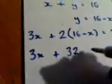So let's expand the brackets. We get 3x and we'll have plus 32 take away 2x that will equal 26. So what I've actually achieved is an equation all in terms of x.